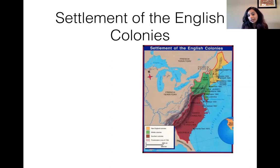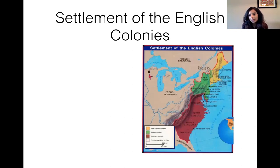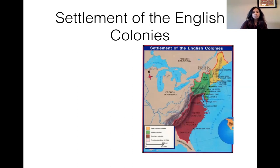You can see the New England colonies — Massachusetts, New Hampshire, Connecticut, Boston, Plymouth, Rhode Island. Then you have the middle colonies: Pennsylvania, New York, New Jersey, Philadelphia, Wilmington, Delaware, etc. And the southern colonies: Maryland, Virginia, North Carolina, South Carolina, Georgia, etc.